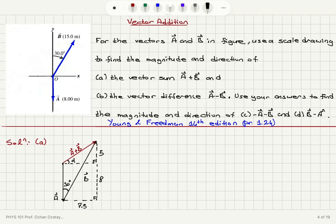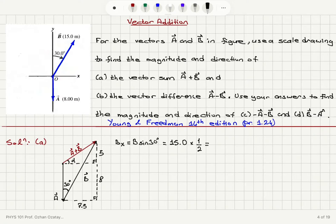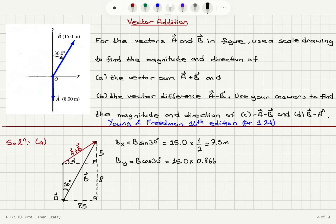Looking at the x-component of vector b, that is the magnitude of vector b times sine of the angle it makes with the positive y-axis: 15.0 meters multiplied by one-half, giving us 7.5 meters. For the y-component of vector b, we have the magnitude multiplied by cosine 30, which is 15.0 times 0.866 (root 3 over 2), giving us roughly 13.0 meters.